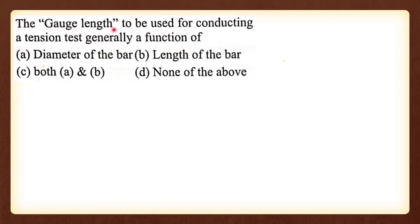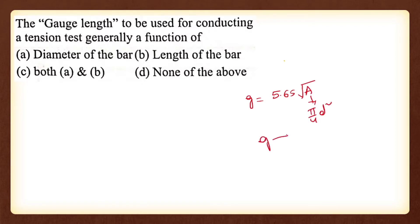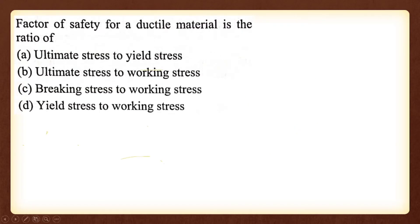The gauge length to be used for conducting a tension test is generally a function of the diameter. The gauge length formula is 5.65 times the square root of the area, and the area is pi by 4 times D squared — so gauge length depends on the diameter. Option A is the correct answer.